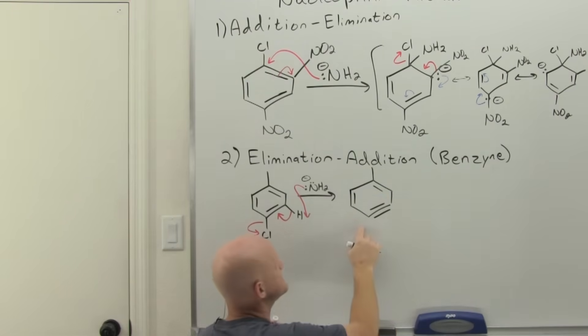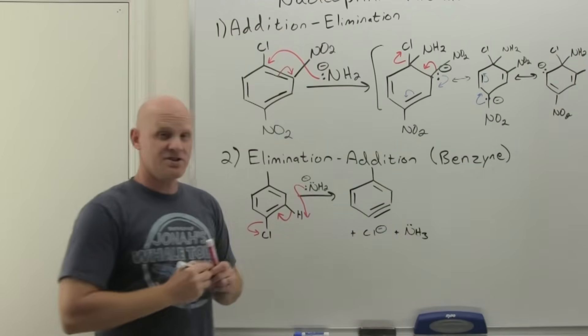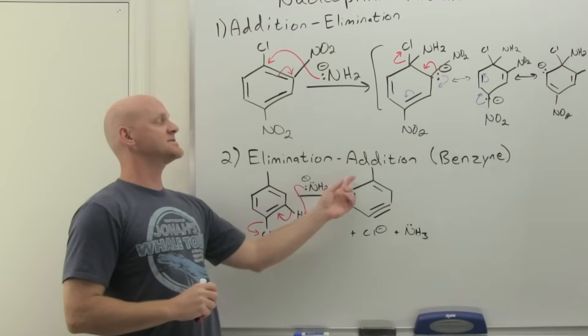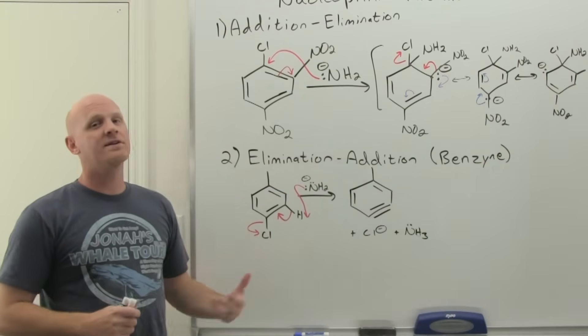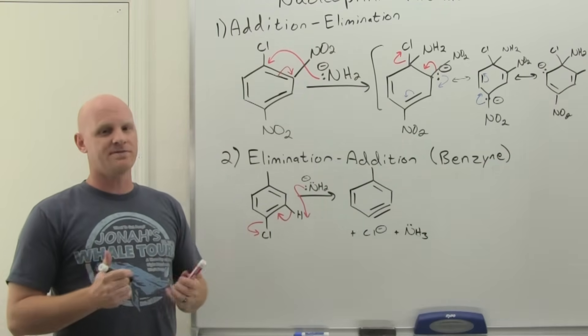It's this lovely structure here that we refer to as the benzyne. Notice we also formed a chloride ion and we'll just draw it out as ammonia. We've done the elimination. Guess what comes next? Yes. The addition. And so now we're actually going to add our nucleophile.